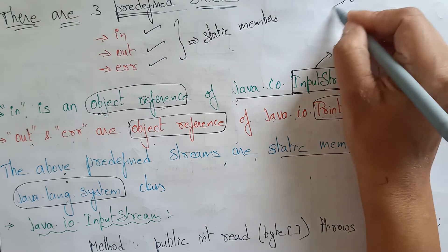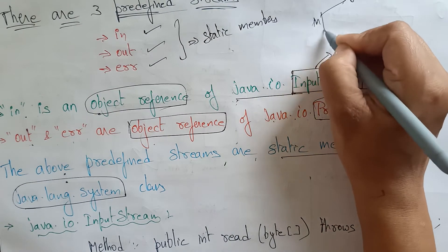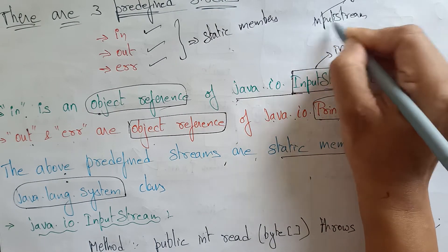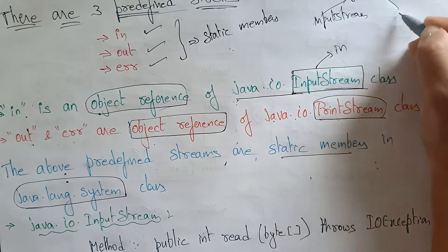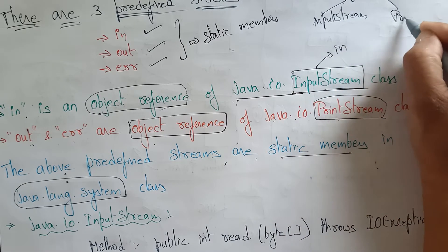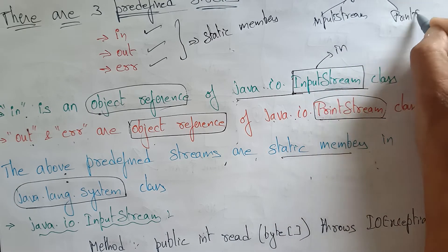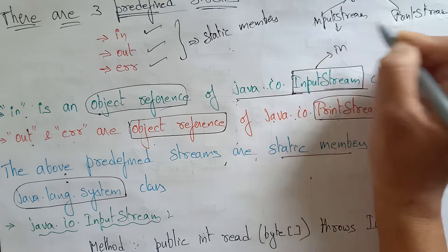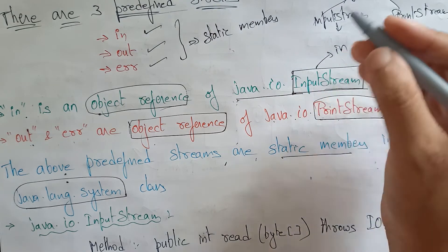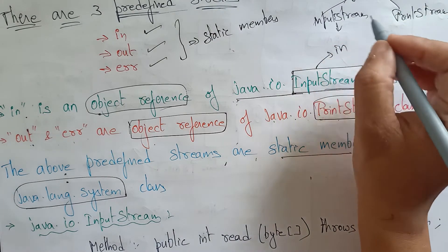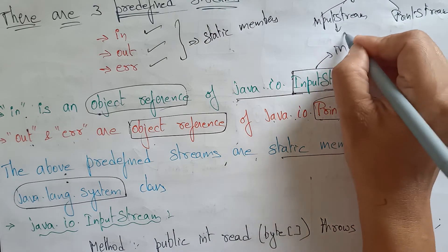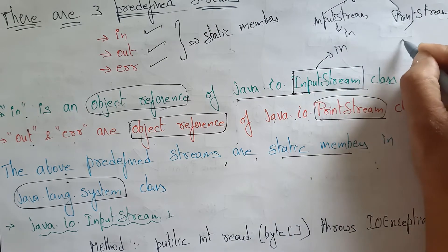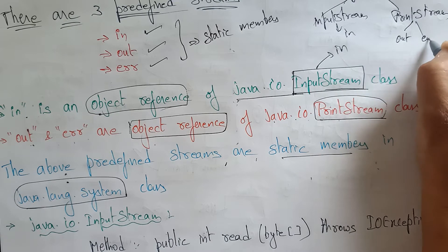In the System class, which is a super class, InputStream is a subclass, and PrintStream is also a subclass of the System class. So the predefined stream for InputStream is 'in', and for PrintStream, the predefined streams are 'out' and 'error'.